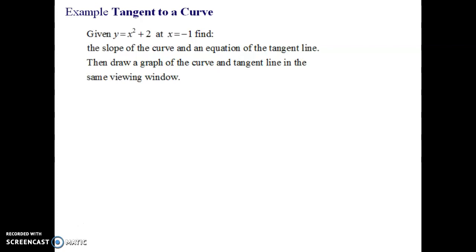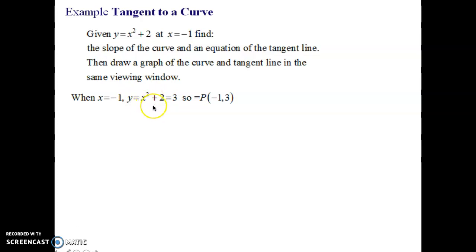Let's do an example. Given Y equals X squared plus 2 at X equals negative 1, find the slope of the curve and the equation of the tangent line, then draw the graph of the curve and the tangent line in the same viewing window. This one is from the book. So first we want to figure out: when X equals negative 1, what's the value of the function? What's the actual point of tangency? Negative 1 squared is 1 plus 2 equals 3. So the point of tangency is the point negative 1, 3.